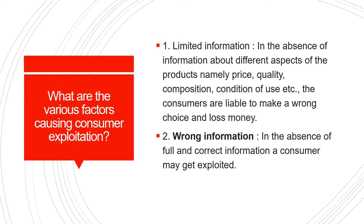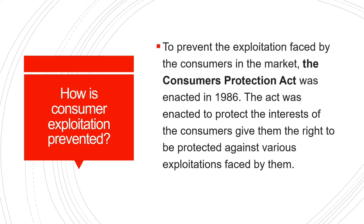In the absence of full and correct information, a consumer may get exploited. How is consumer exploitation prevented? To prevent exploitation faced by consumers in the market, the Consumer Protection Act was enacted in 1986, to protect the interests of consumers and give them the right to be protected against various exploitations.